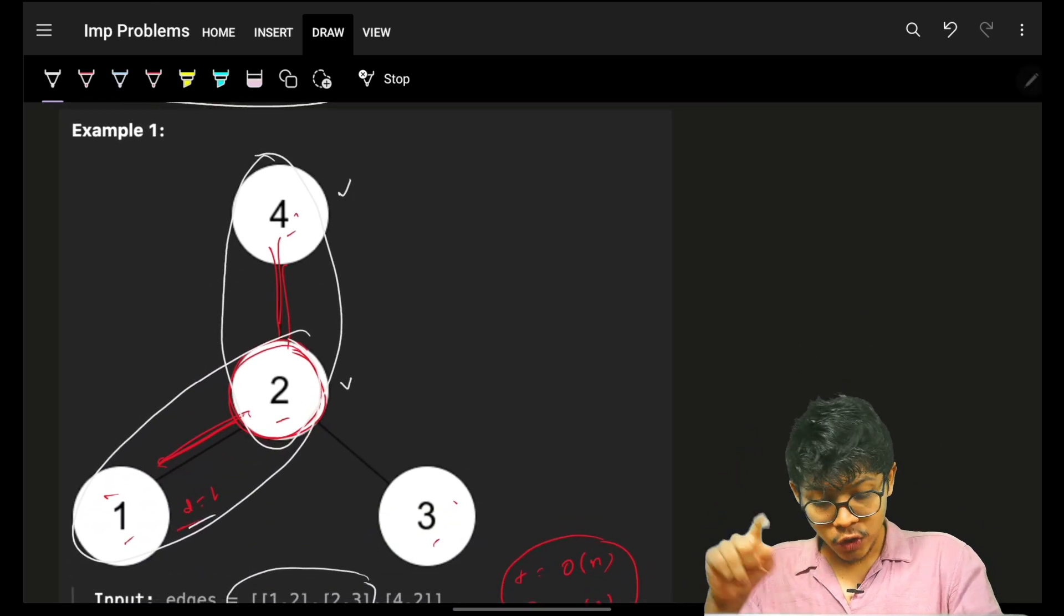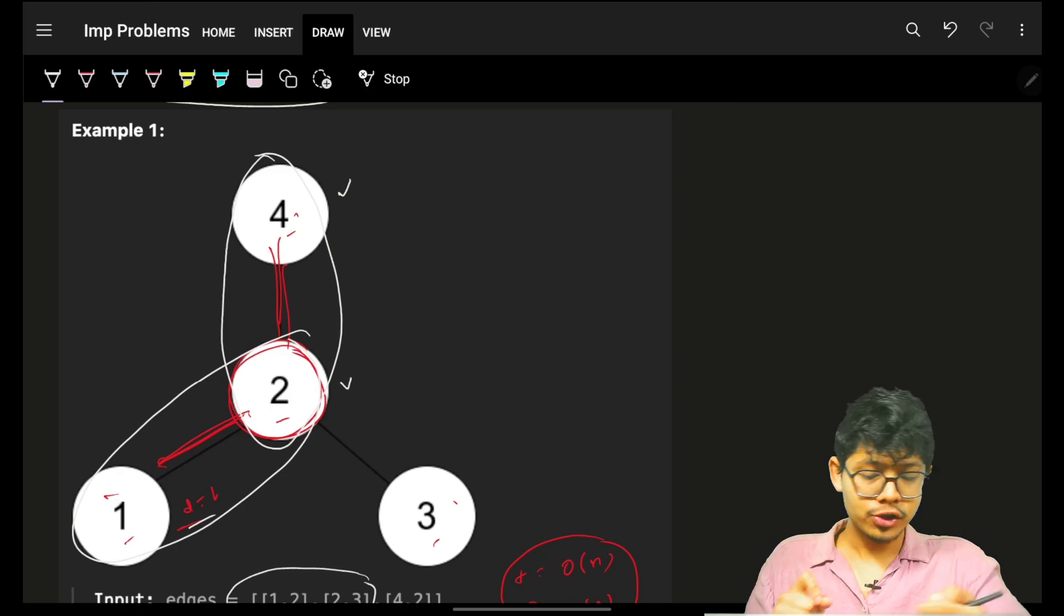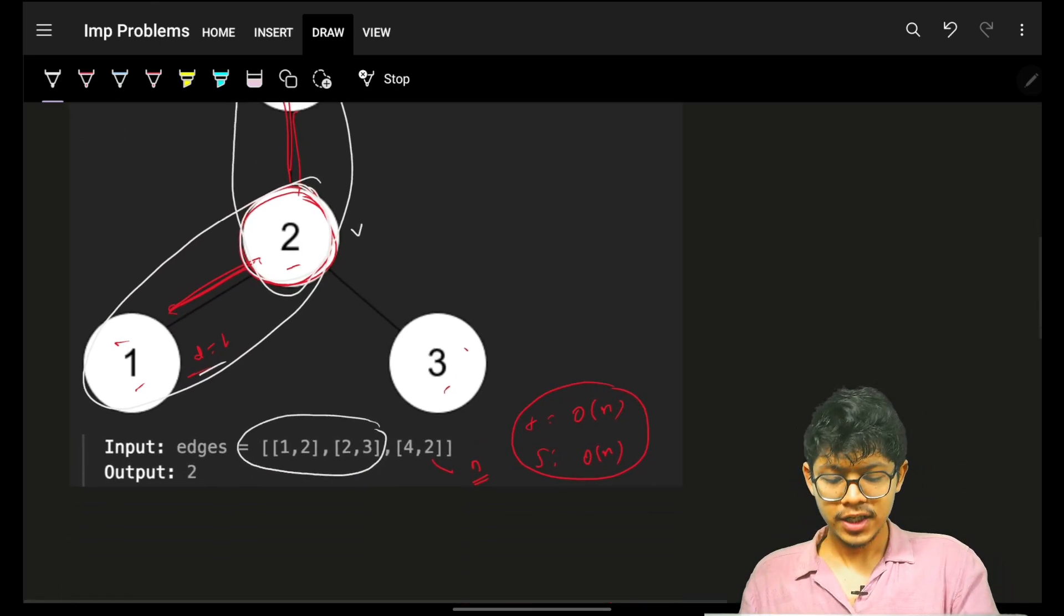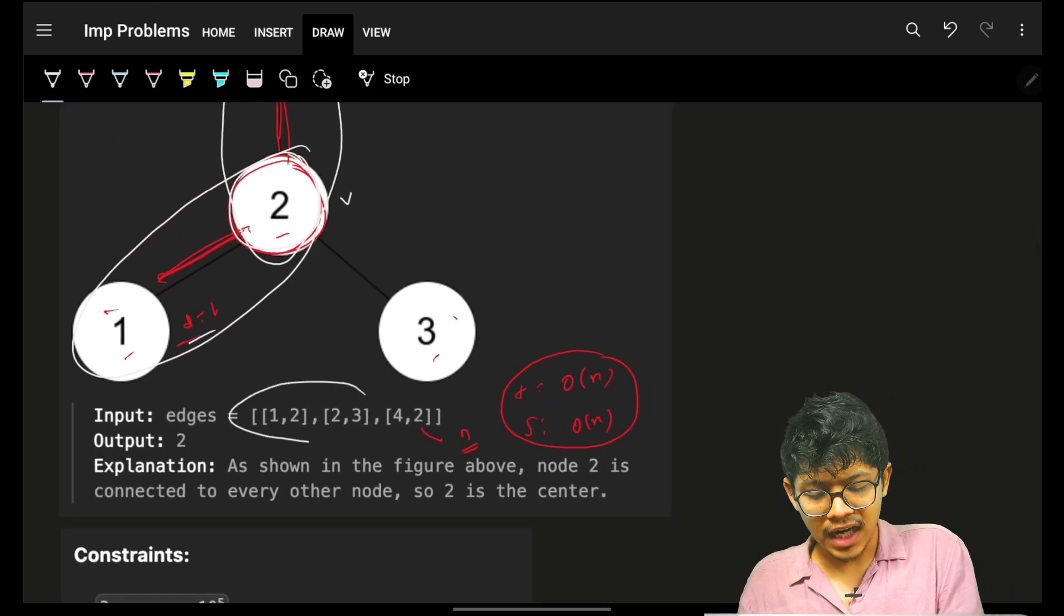So I can only compare the starting two nodes, and I can just check: is 1 equal to 3? Is 2 equal to...?